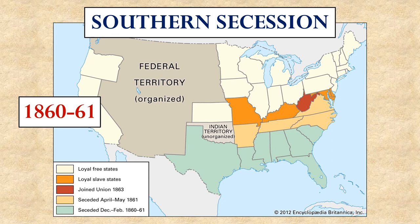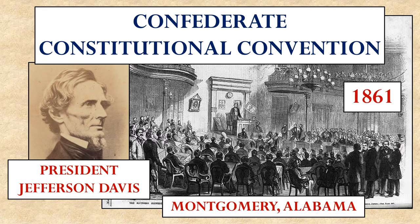After South Carolina, several other states immediately followed across the Deep South: Texas, Louisiana, Mississippi, Alabama, Georgia, and Florida joined them in resigning from the Union. These rebellious states then gathered together in Montgomery, Alabama, to reorganize themselves as a confederacy. They wrote a Confederate constitution and elected their first president, a man named Jefferson Davis.